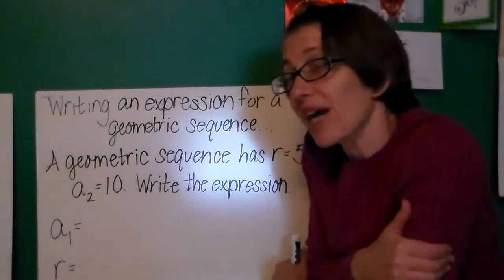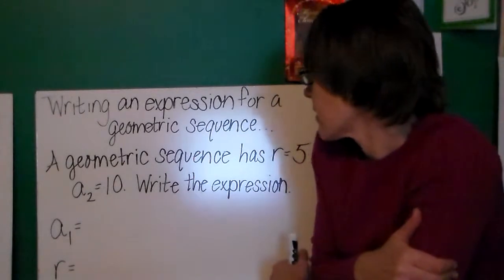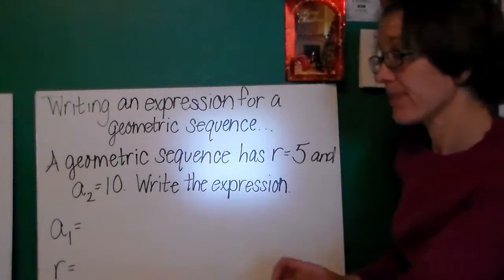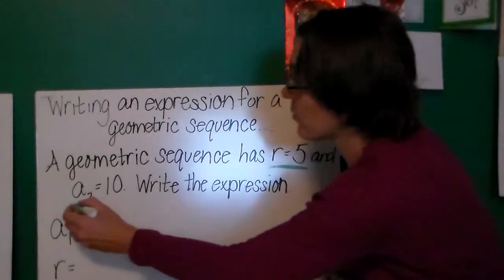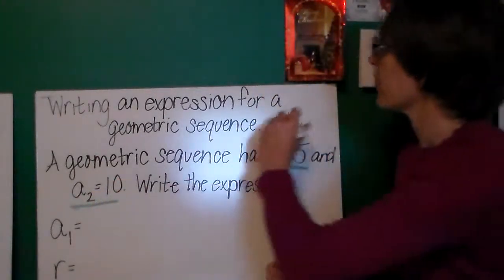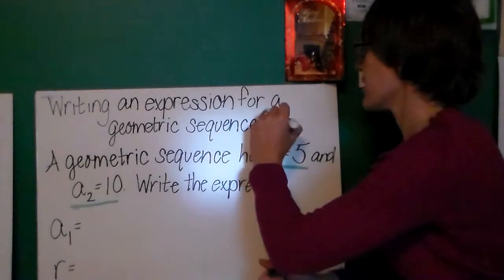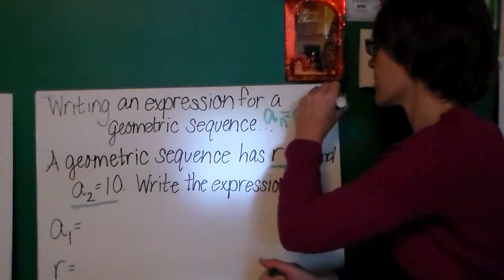Let's look at writing an expression for a geometric sequence. A geometric sequence has r equal to 5 and a_2 equal to 10. Write the expression. Now, we want to write an expression of the form a_n equals a_1 times r to the n minus 1 power.